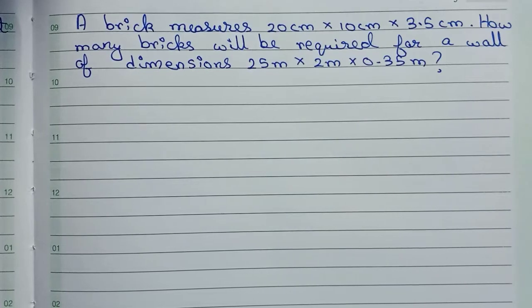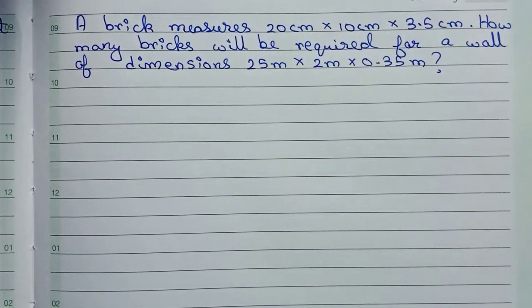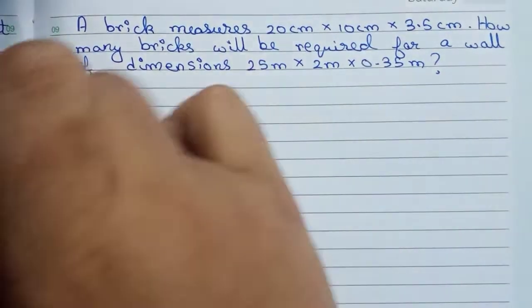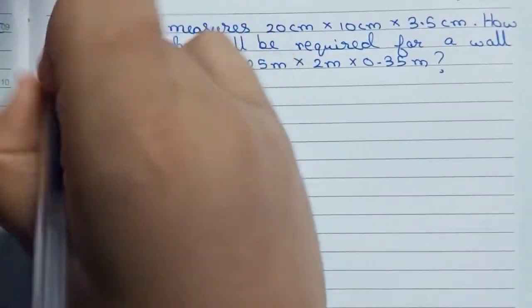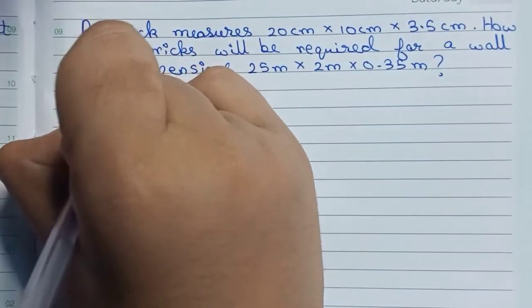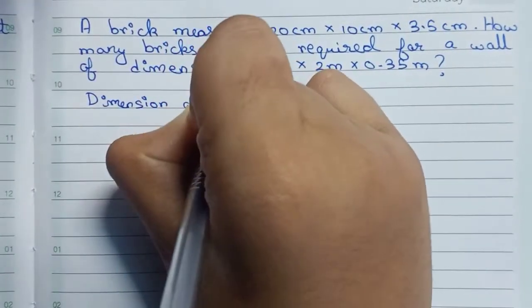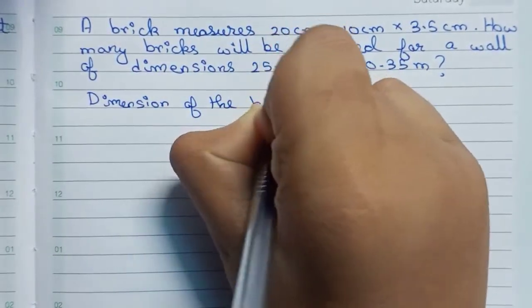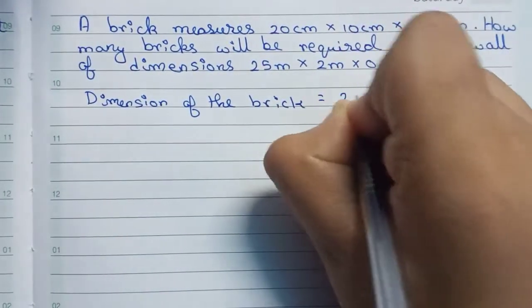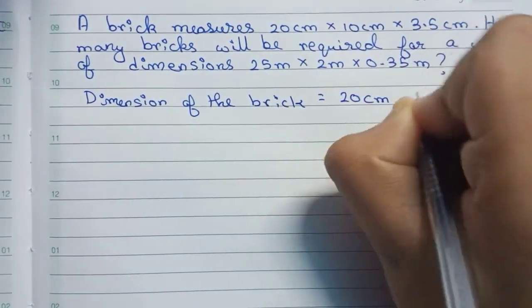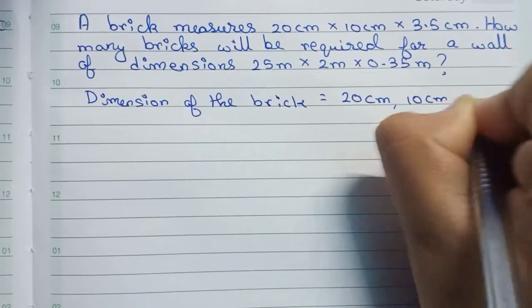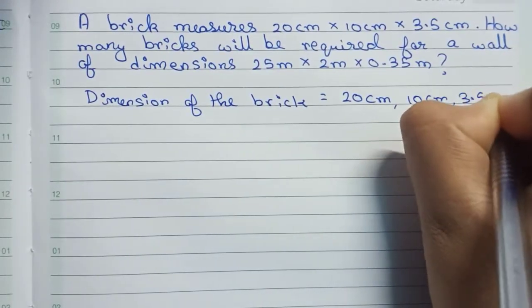So this is our question. Now I solve this. First, we write dimension of the brick equals to—it is given: 20 cm, 10 cm, 3.5 cm.